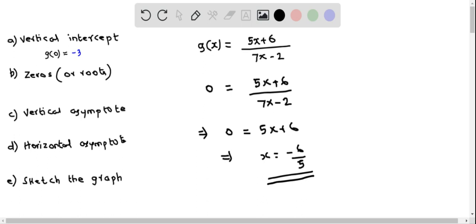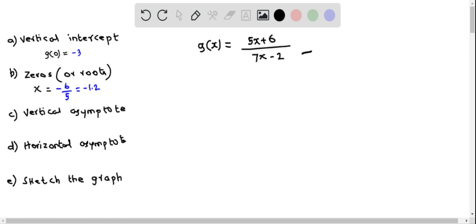We now find the vertical asymptote of function g. Vertical asymptote occurs when the denominator equals 0. So we have the denominator 7x minus 2 and we set this equal to 0. So 7x minus 2 equal to 0. From this, we determine x by adding 2 to both sides and dividing by 7. So we get x equals 2/7. This is the equation of vertical asymptote.